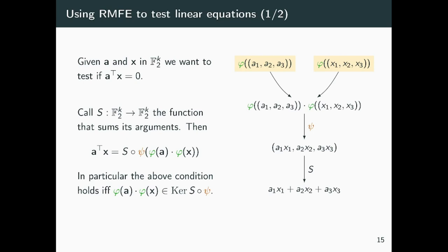The easiest example is checking the linear equation, in particular checking that a given vector x is orthogonal to another vector A given in the clear. In order to do so, assuming both vectors consist of bits, we can take the encoding of them. Taking the product of the encodings and applying ψ to this product, as mentioned before, gives us the entrywise multiplication. This is not yet the inner product of the two vectors, but it can become the inner product by applying the linear function S, which essentially sums the entries of a given vector.